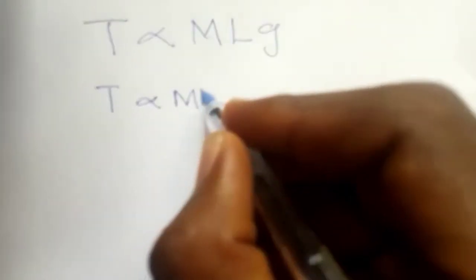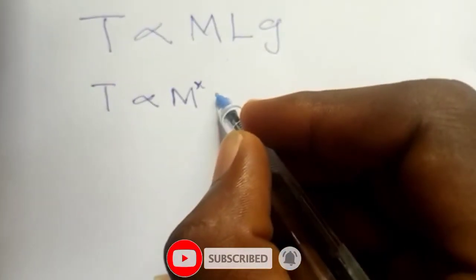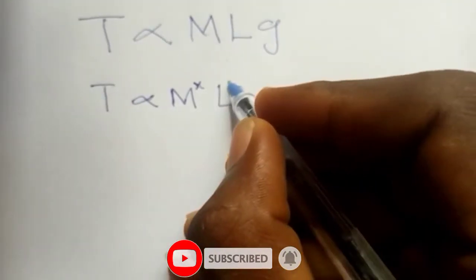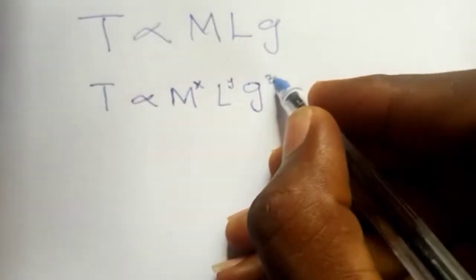Since we do not know the relationship, our time is still proportional to M with none of the exact relationship. So assign variables to the powers of these quantities: assign x for M, y for L, and for g we assign z.